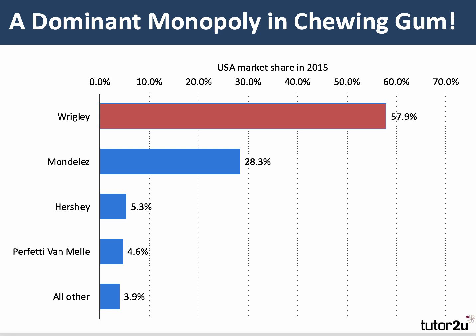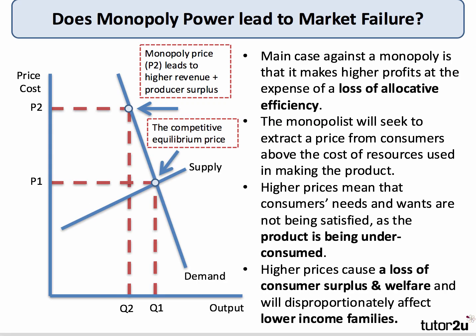The key issue with this business and others is what the economic case for and against monopoly actually is. A key question to ask in AS micro is: does monopoly power lead to market failure? In AS micro you're not expected to use sophisticated cost and revenue curves — that comes in year two — but it's a really good use of simple supply and demand to think about how monopoly might lead to a loss of economic efficiency.